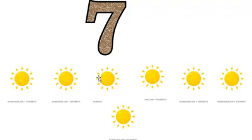Another number is 7. Let's count the suns. How many suns are there? 1, 2, 3, 4, 5, 6, 7.